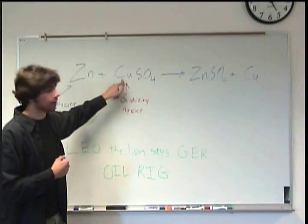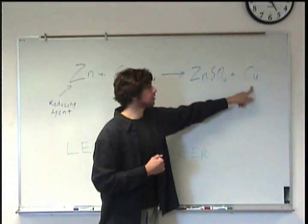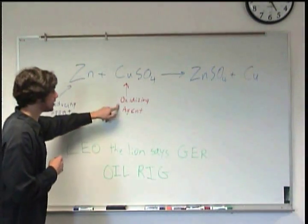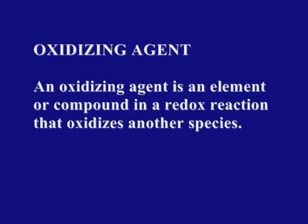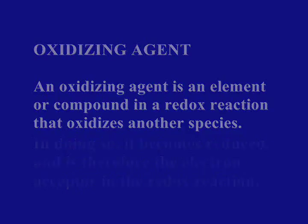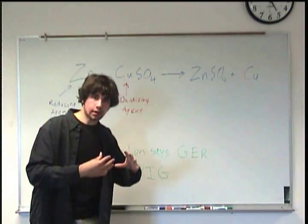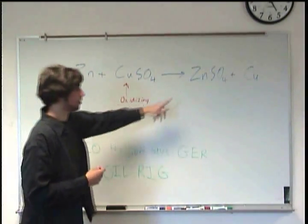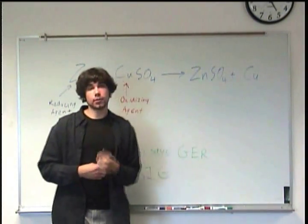Here, it had the positive 2 charge. It gained 2 electrons and became just regular old copper again. But on the flip side, since copper is the oxidizing agent, it took those electrons, but it had to steal it from the zinc. So the zinc ended up getting the positive 2 charge, and now it's bonded with the sulfate.